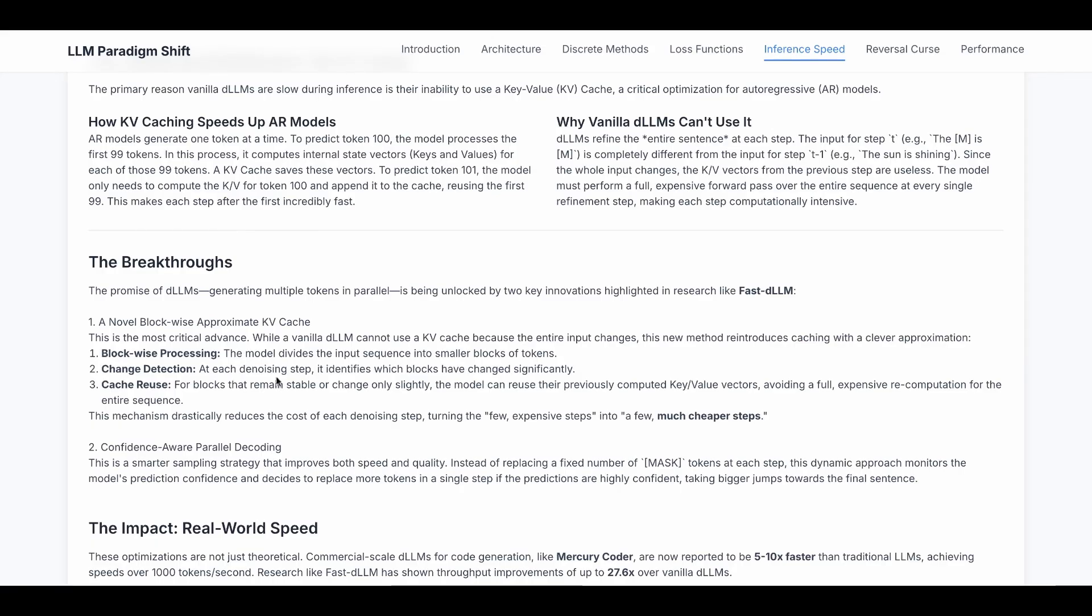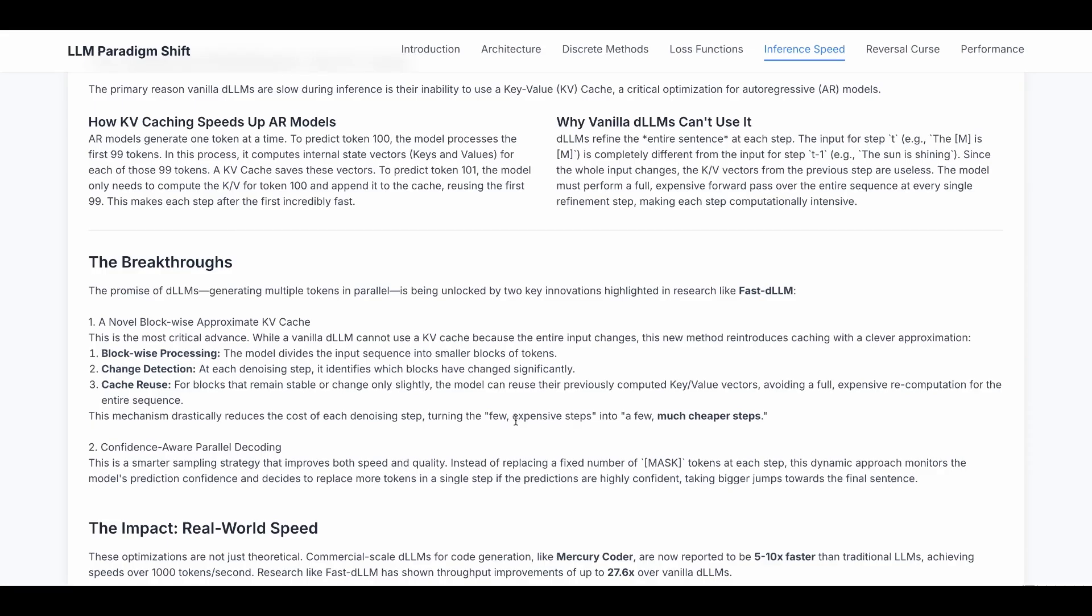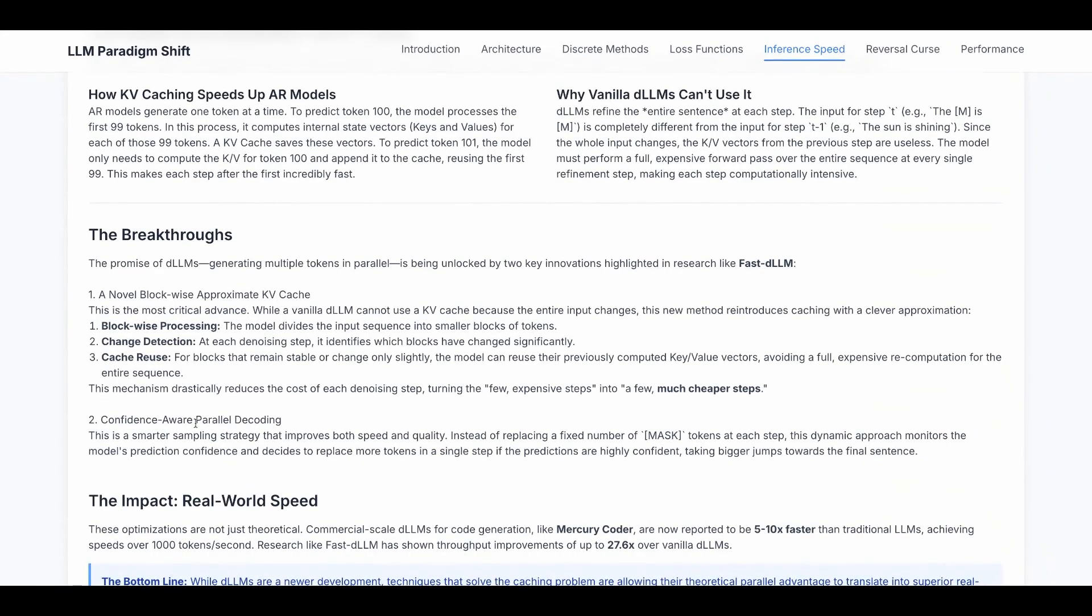And then for each block, we do change detection. At each denoising step, it identifies which blocks have changed significantly and which have not. So for blocks that remain stable or change only slightly, the model can reuse their previously computed KV vectors, avoiding a full expensive recomputation for the entire sequence. So this turned the previous few expensive steps into a few much cheaper steps.